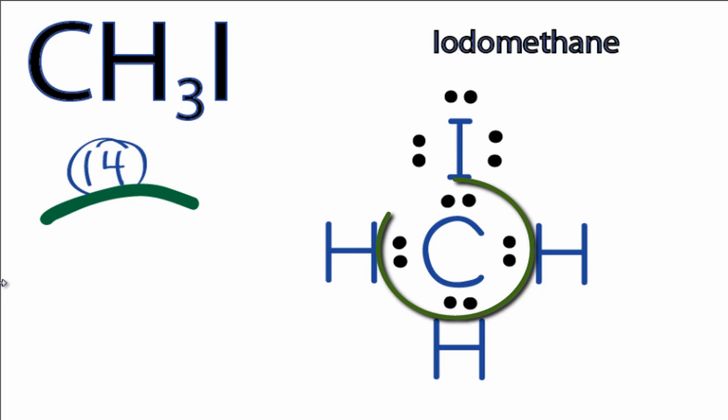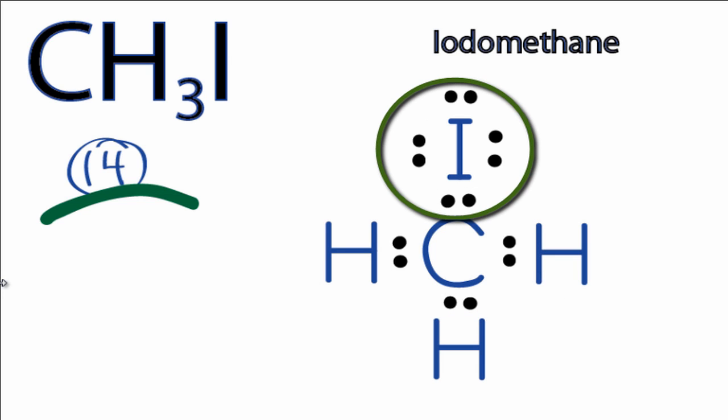The carbon has 8 valence electrons around it, so it has an octet, and the iodine also has an octet. So we've used all the valence electrons for CH3I, and we've completed the octets, or filled the outer shells, on each of the atoms.